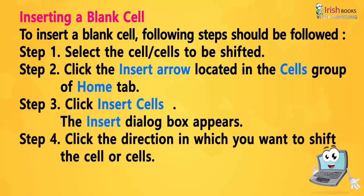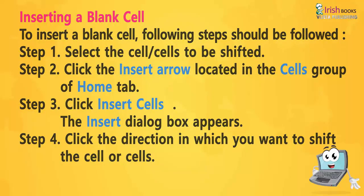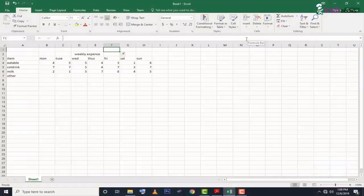Inserting cells: Step 1: Select the cell or cells to be shifted. Step 2: Click the insert arrow located in the cells group of the Home tab. Step 3: Click 'Insert Cells' — the Insert dialog box appears. Step 4: Click the direction in which you want to shift the cells.